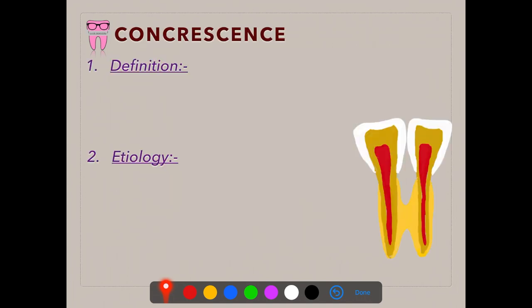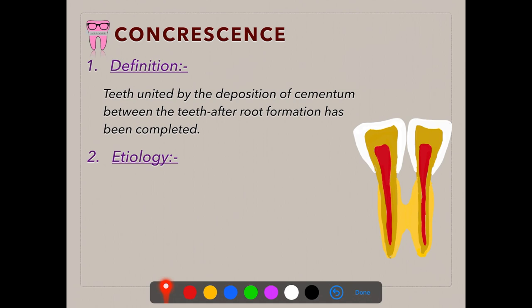Coming to the third developmental disturbance affecting the shape of the teeth — concrescence. Concrescence is defined as a developmental condition in which teeth are united by the deposition of cementum. If you remember, fusion united teeth by dentin, whereas concrescence is where teeth are united by the deposition of cementum after root formation has been completed — this is very important.